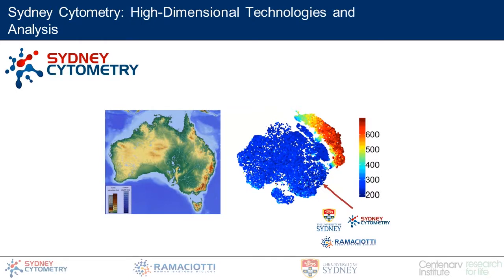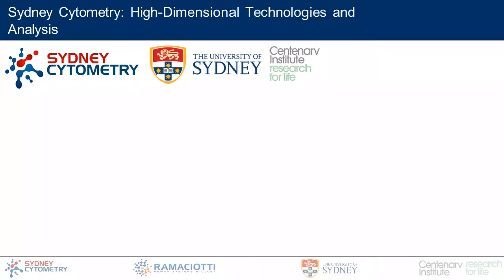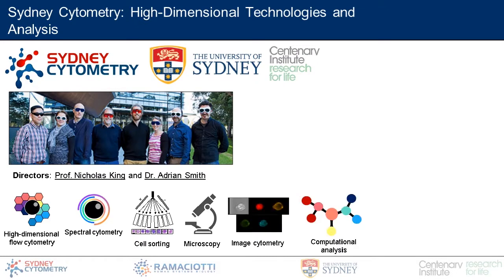This is a joint venture between two separate institutes — the University of Sydney and the Centenary Institute — which share this role. The idea is to bring not just one form of technology, but multiple different kinds of technology to our users. The technologies we offer are all designed around single-cell measurements, including high-dimensional fluorescence technologies, imaging, microscopy, and cell sorting.